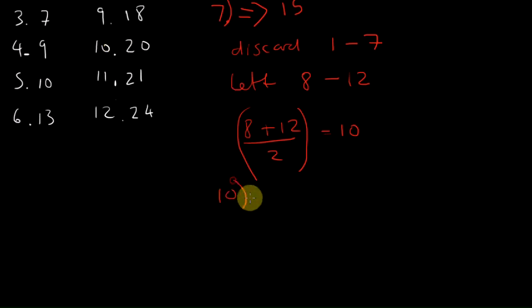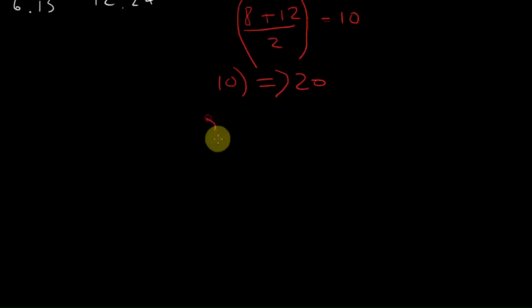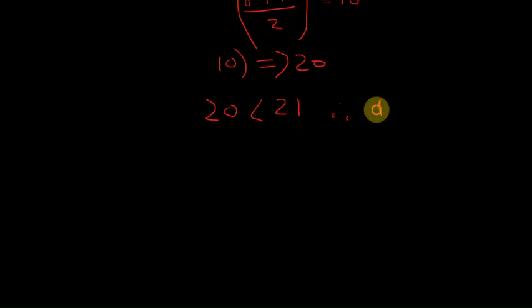10 is 20. We know that 20 is less than 21, therefore discard everything beneath 10. In fact, rather than say discard everything beneath 10, it's better to say keep everything above 10. So we're left with 11 to 12.